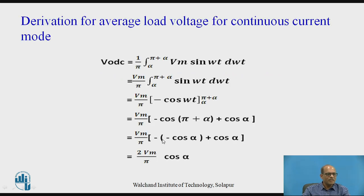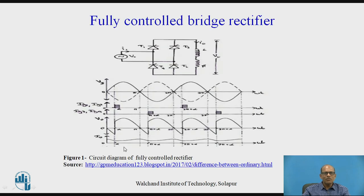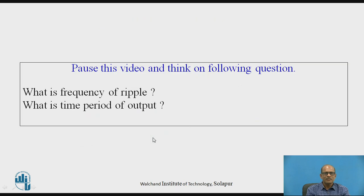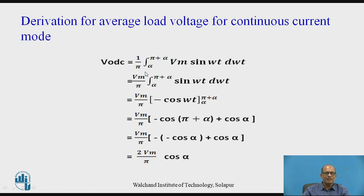Now let us derive the average load voltage for continuous current mode. For continuous current mode, referring back to the waveform, the output is present from α to 2π plus α, and this is the part of the input, that is Vm·sin(ωt). So these limits of integration are used in the derivation. V0_dc equals the integral of Vm·sin(ωt) d(ωt), with limits from α to 2π plus α, divided by the period π, giving 1/π.